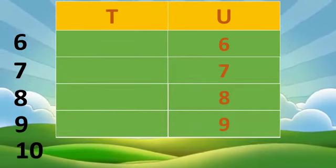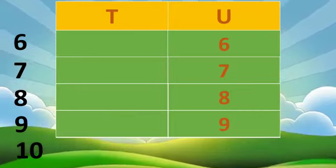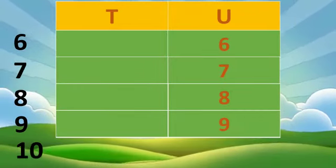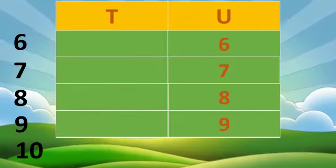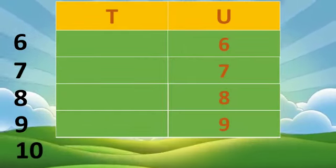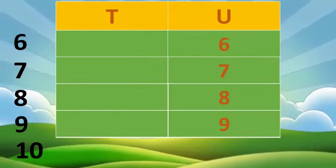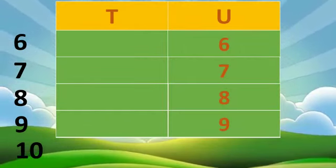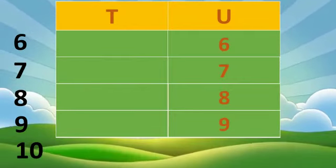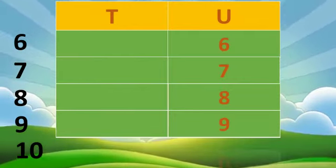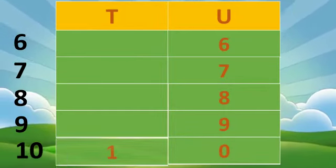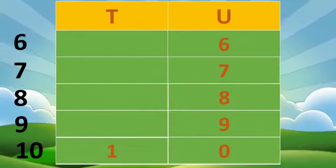Now, number ten. Ten is a two-digit number. Two-digit numbers are placed in both the units column and the tens column, as they have tens and units. We place the zero in the units column and one in the tens column.